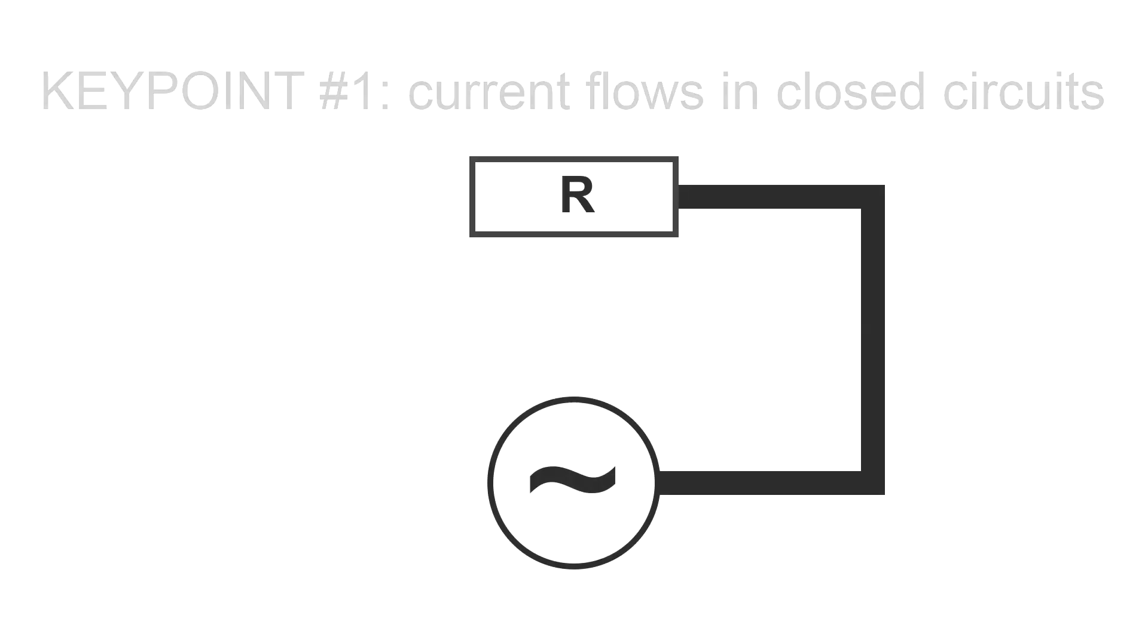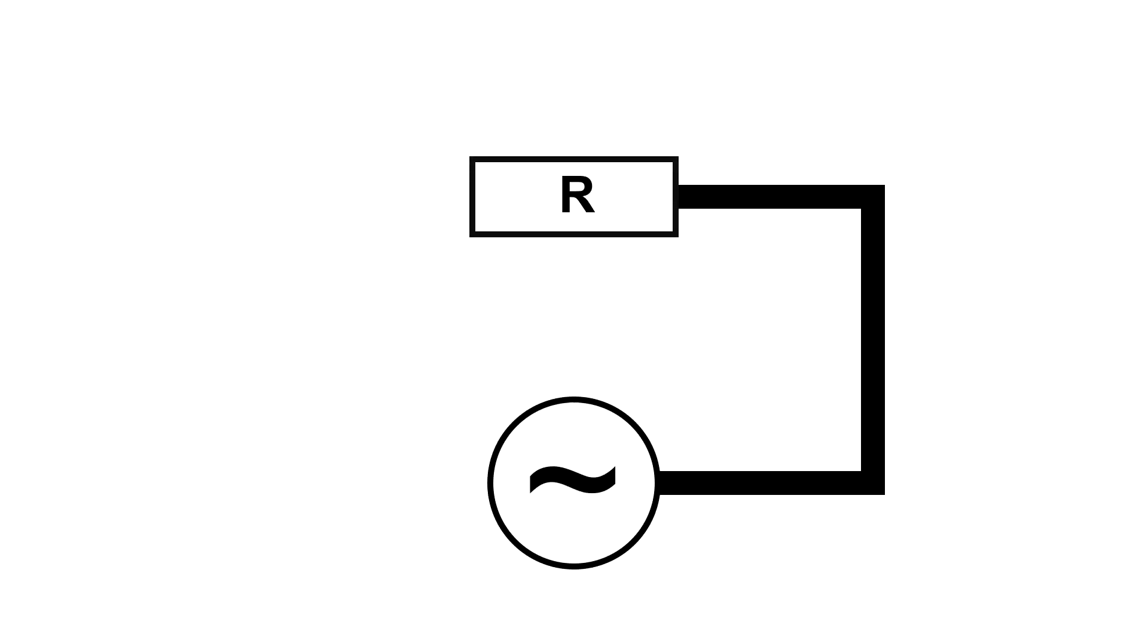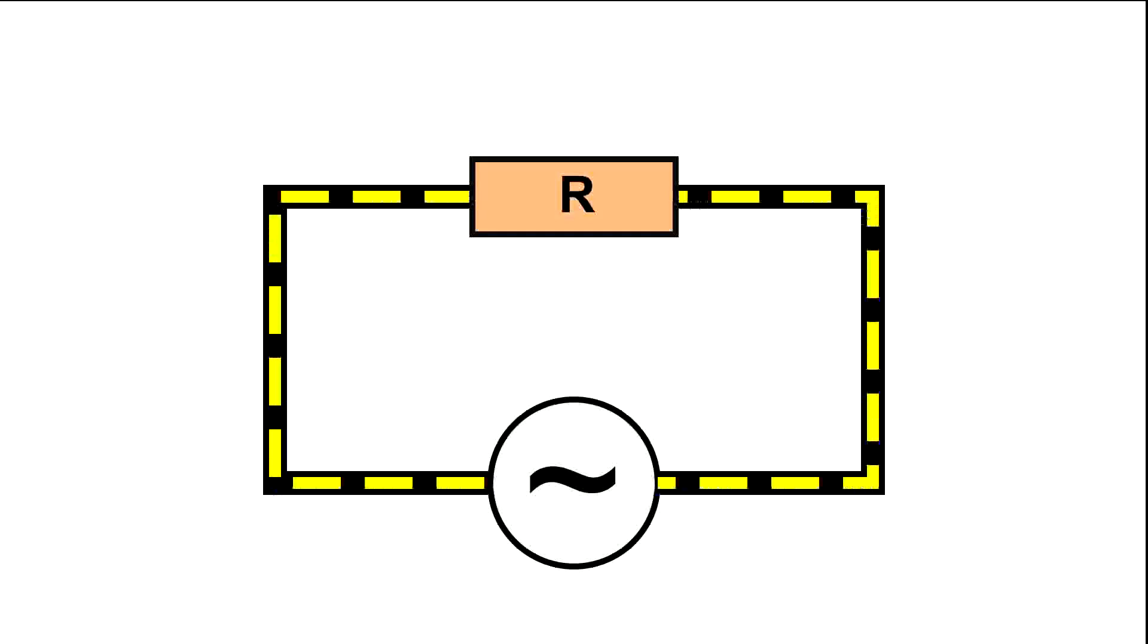To explain what we have seen so far, we have to work on some key points. Key point number one, current flows in closed circuits. The first key point involved is that an open circuit does not carry current. To have current flowing, the circuit must be closed.